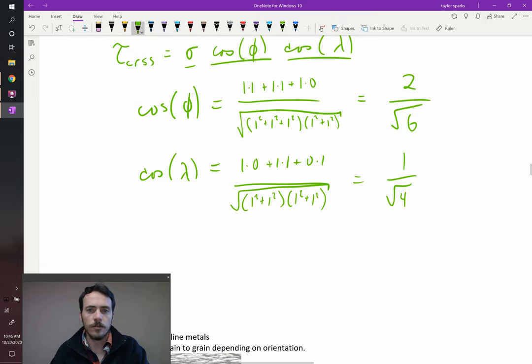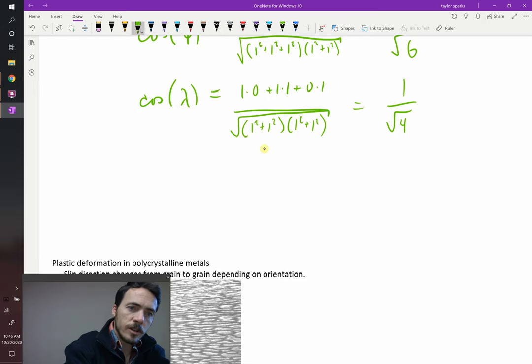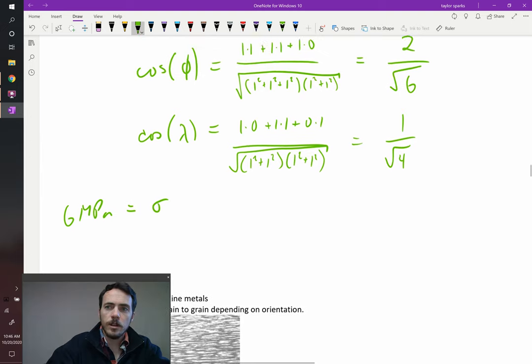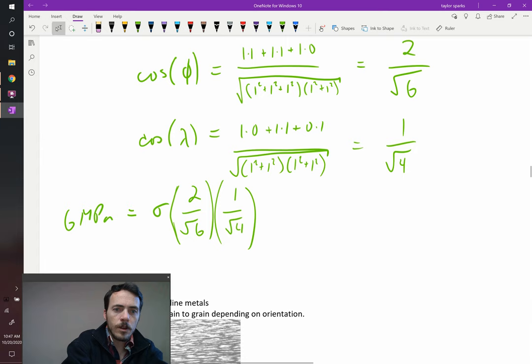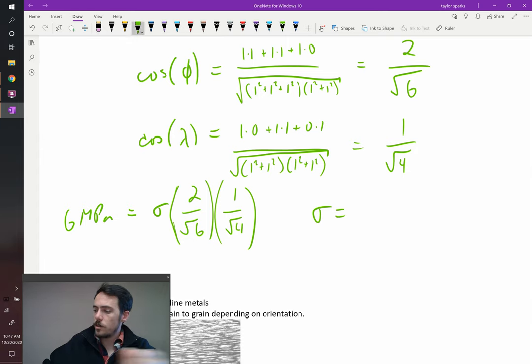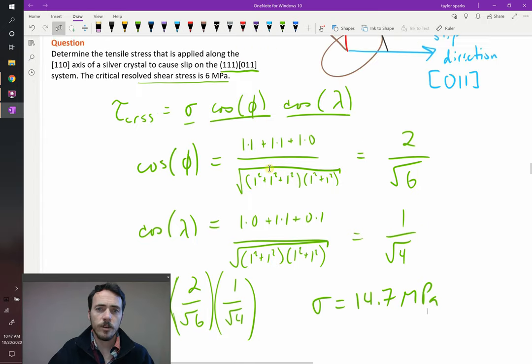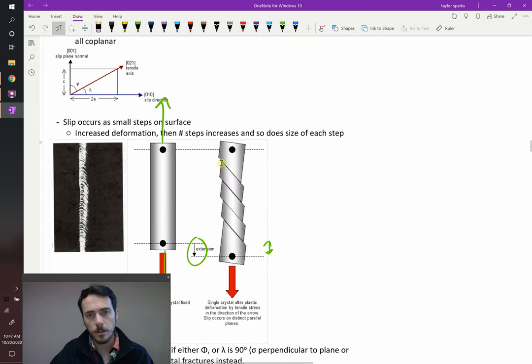So let's go ahead and finally solve for this. If the critical resolved shear stress is 6 megapascals, we want to solve for the stress that will cause this thing to start slipping. It's going to be sigma multiplied by 2 over root 6 multiplied by 1 over root 4. Taking those to the other side, dividing both sides by these two terms, I find that the stress necessary to get this to start slipping is going to be 14.7 megapascals. So that's an example of how you can use slip in single crystals to figure out the stress that will cause these things to start forming these bands in a single crystalline material.